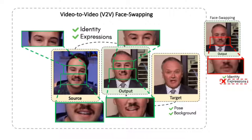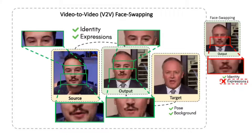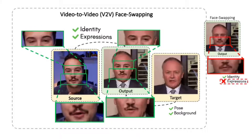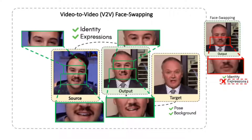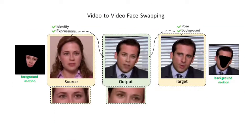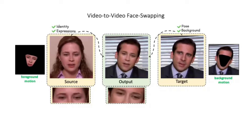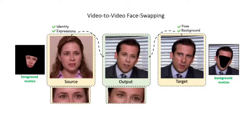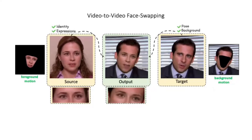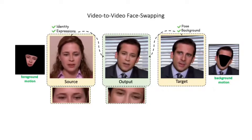To tackle such tasks, we introduce video-to-video face swapping, aka V2V face swapping, a novel task of face swapping. Along with the source identity, V2V face swapping aims to swap the source expressions. At the same time, it aims to retain the rest of the target characteristics like the target pose and background. V2V face swapping is a challenging task as it needs a technique to combine two different motions — the foreground expression motion and the background target motion — and the output should be spatially and temporally coherent with a uniform pose, identity, and motion, while exactly preserving the input characteristics of expressions, identity, background, and pose.